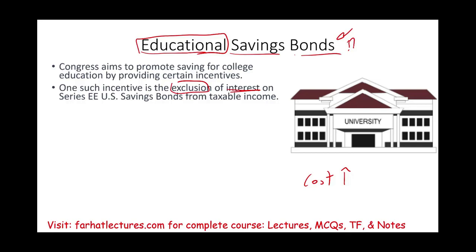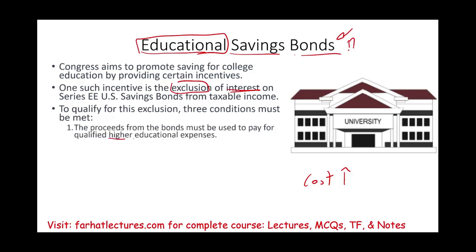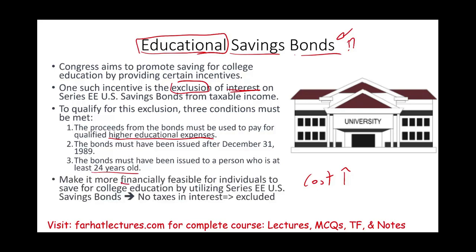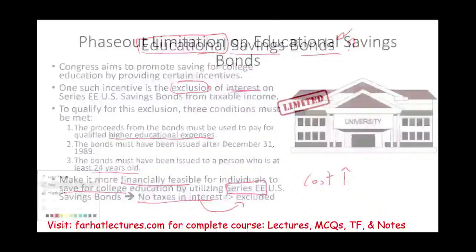The interest on these bonds is tax-free as long as you are using them to pay for education. To qualify for this exclusion, there are certain conditions: the proceeds must be used to pay higher educational expenses, the bond must be issued after December 31st, 1989, and the bond must be purchased by a person who is at least 24 years old — not the person attending school. This is Series EE bonds, and there are phase-out rules and other savings tools we will also discuss.